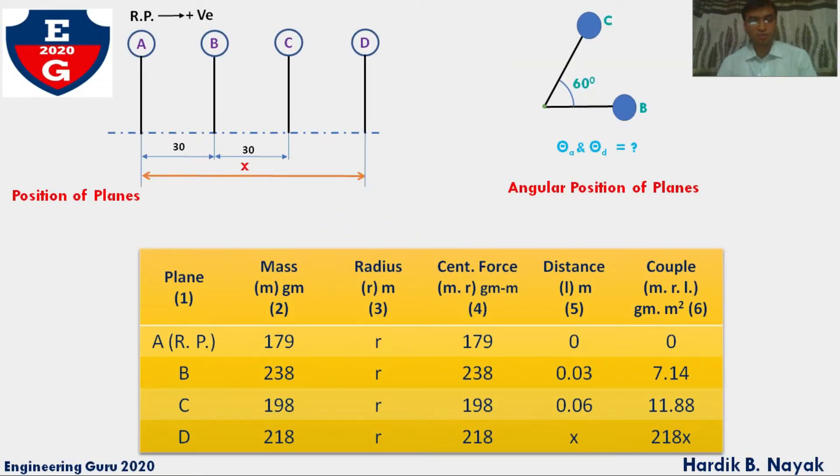Now let's come to an important table. We'll make 6 different columns: column 1 is plane, 2nd for mass, 3rd for radius, 4th for force, 5th for distance, 6th for couple. In column 1, we have planes A, B, C and D. For mass, all masses are in grams: MA is 179, MB is 238, MC is 198, MD is 218 gram.